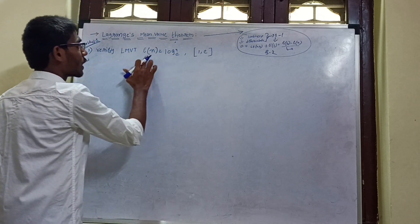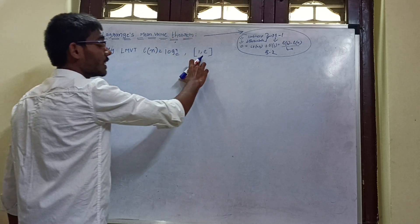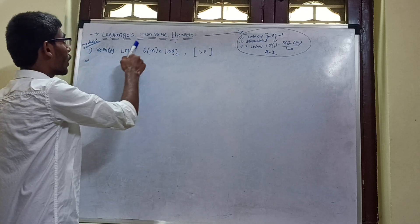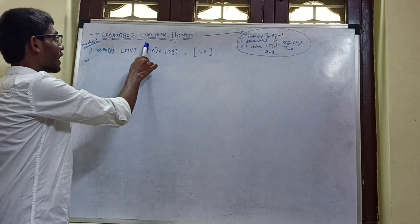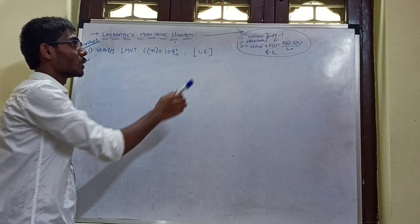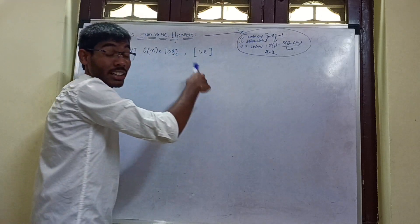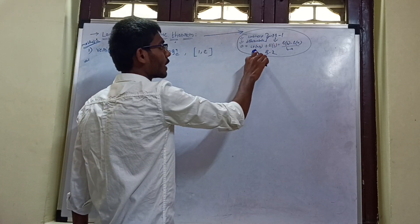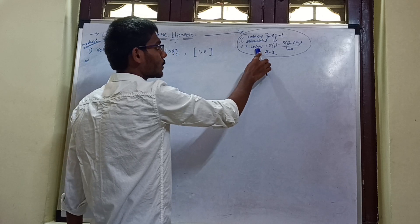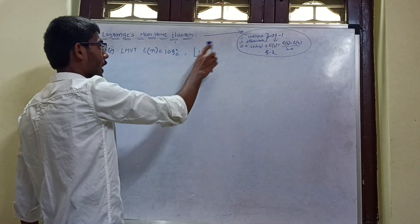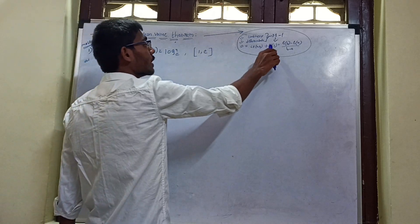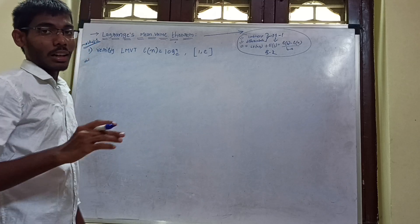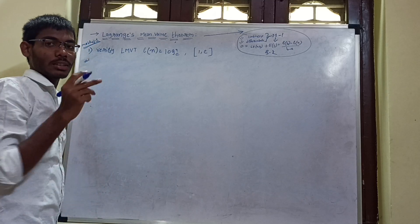The function we have been asked to see is the logarithm function. This is the next interval. First we can see the question, and the next step to solve it is Lagrange's Mean Value Theorem. We have steps: first the function must be continuous, then differentiable. If these two conditions are satisfied, we can go to step 2, where c belongs to (a, b) such that f'(c) = [f(b) - f(a)] / (b - a).